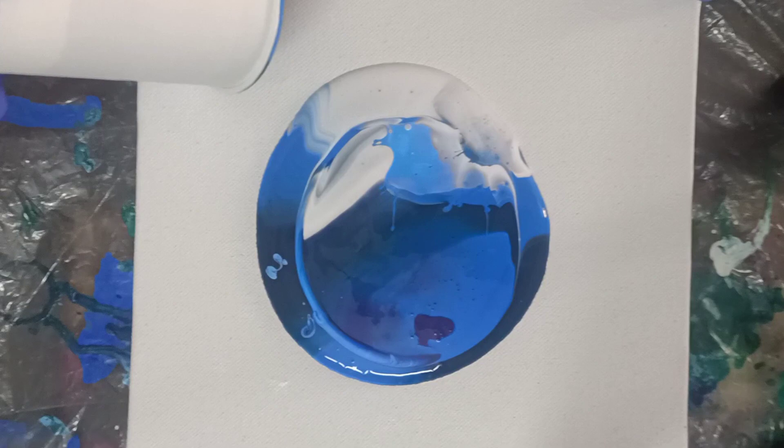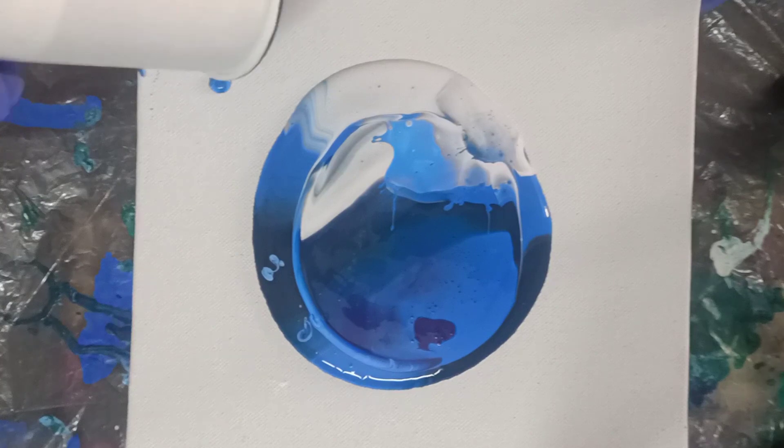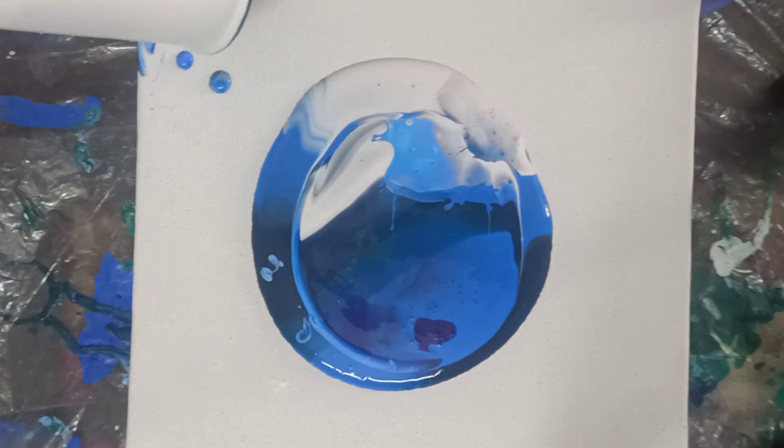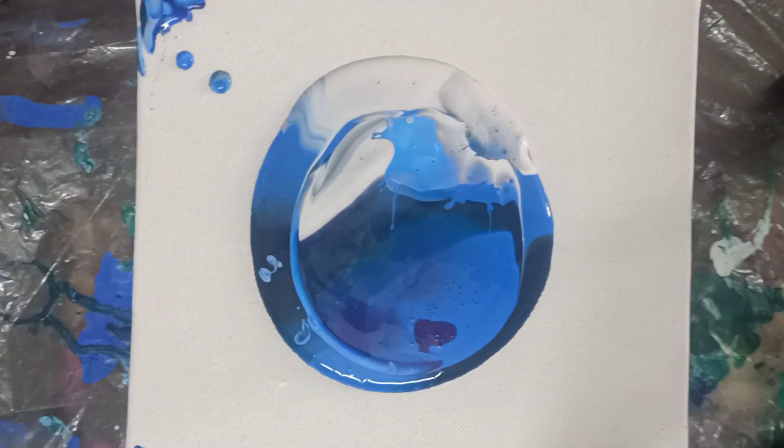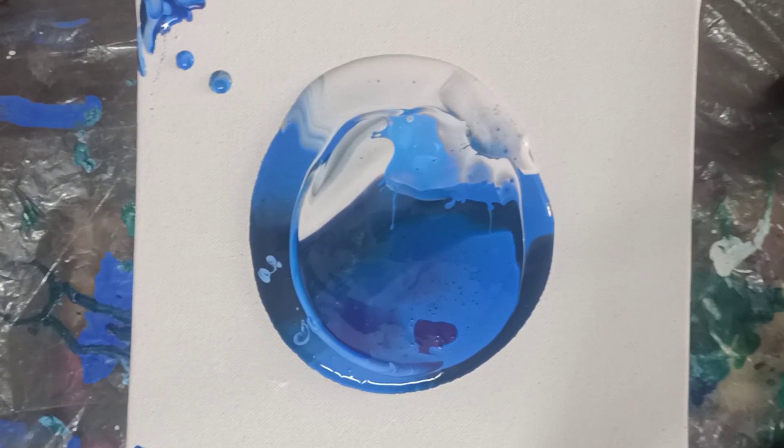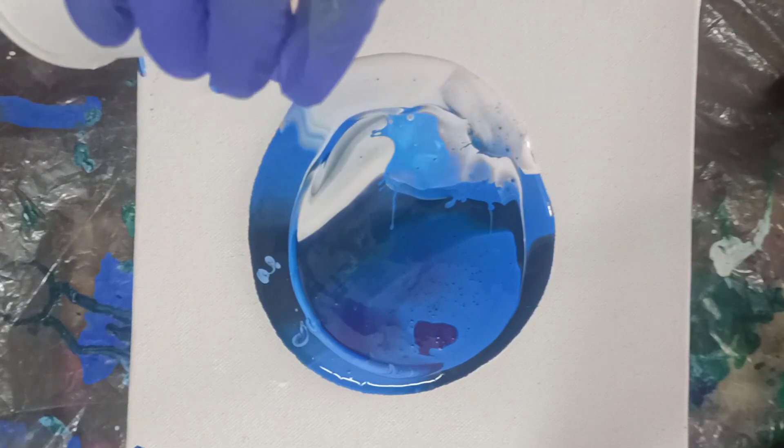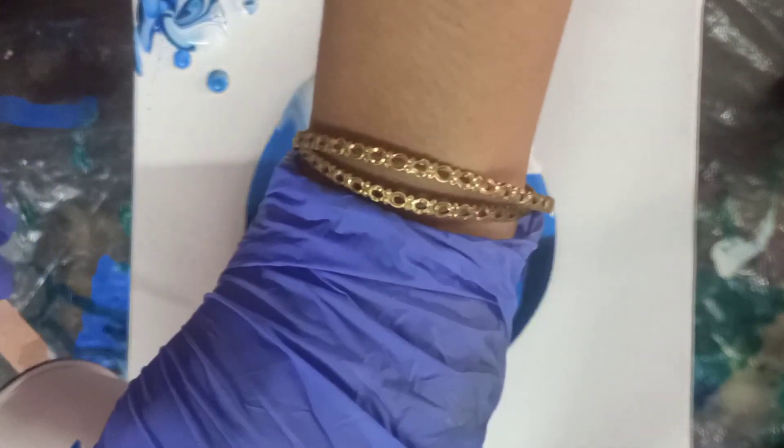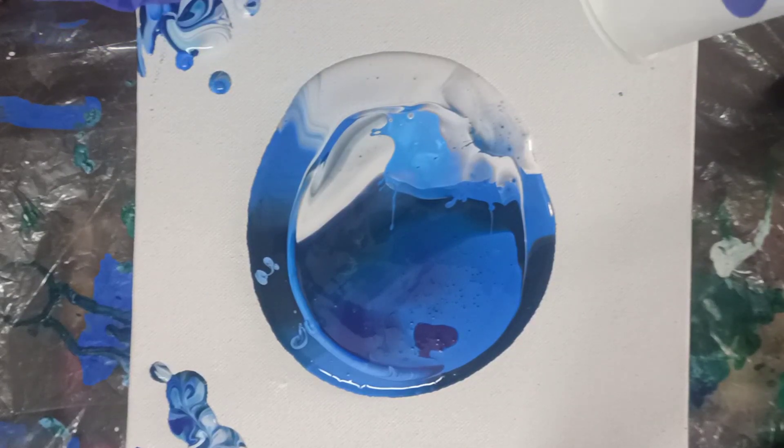Now we just picked up the cup, and as you can see, we have some color left in the cup. You can do one thing: you can just pour the left color on the corners of the canvas. It's not coming out, so what we can do is you can use a stick to pour the color on the canvas. It will also add a different texture on the corner.